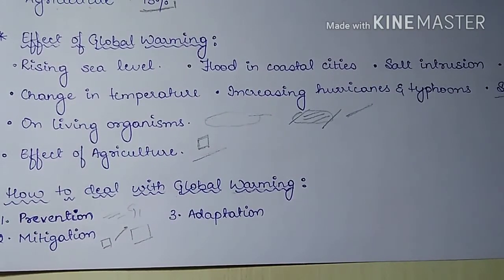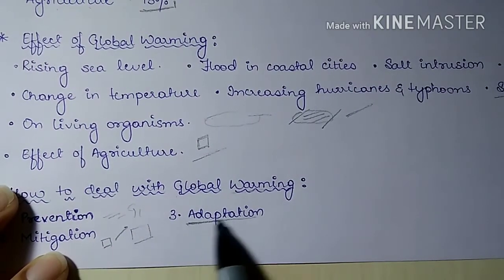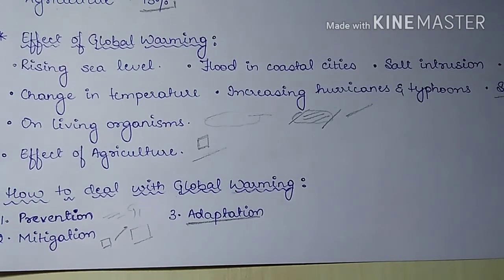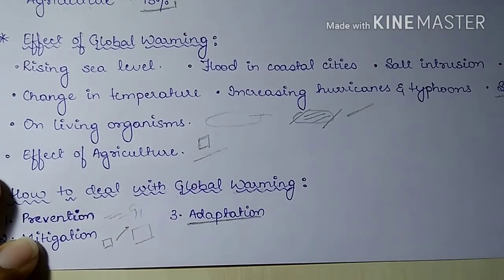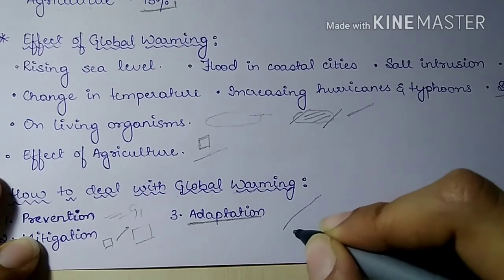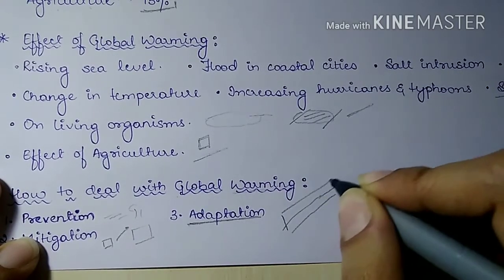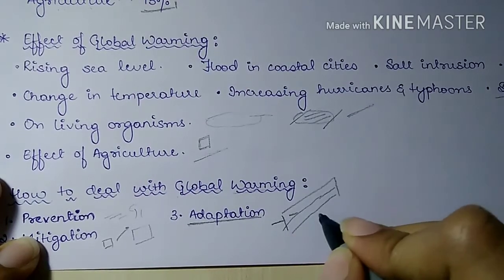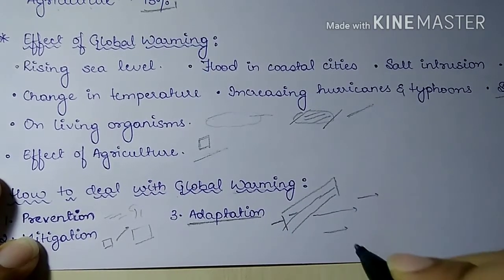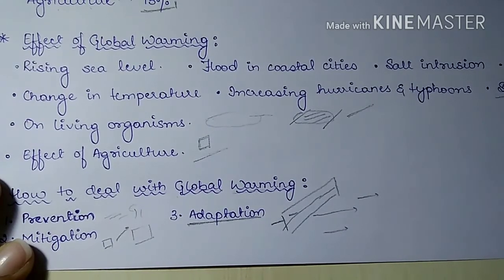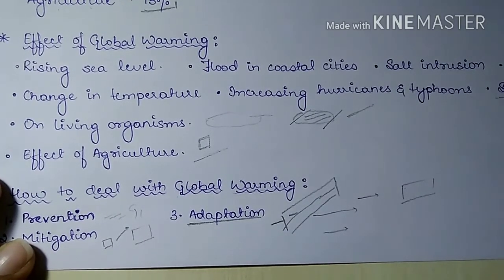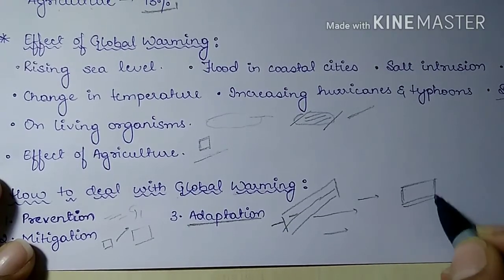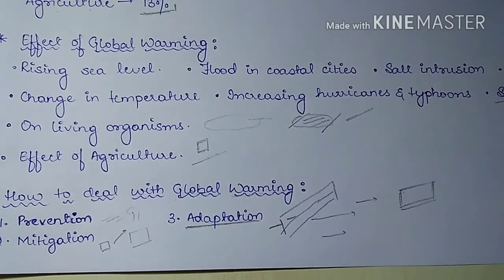Adaptation methods for global warming include building dikes and levees in coastal areas to prevent rising seawater from entering settlements, and planting drought-resistant plants and trees to prevent soil erosion in desert areas. Through prevention, mitigation, and adaptation, we can address the challenges of global warming.